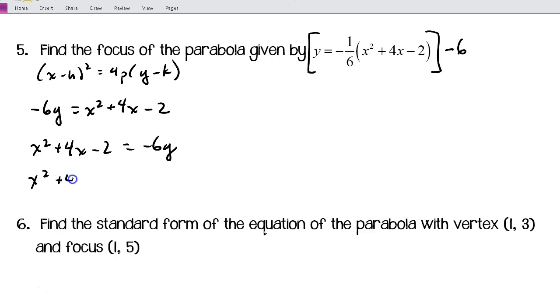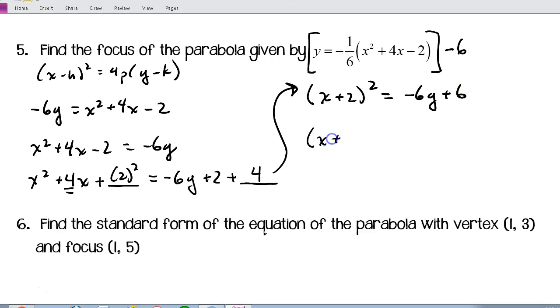I'm going to have x squared plus 4x. I'm going to have to complete the square. I'm going to move that negative 2 to the other side: negative 6y plus 2, and then whatever I add over here. I take half of this term and square it, so that's 2 squared. I'm going to also add 4 to that side. Now I have a perfect square trinomial which we'll factor to (x + 2) squared equals negative 6y plus 6. One more step: (x + 2) squared, factor out that negative 6, and then (y - 1). So here's our standard form.